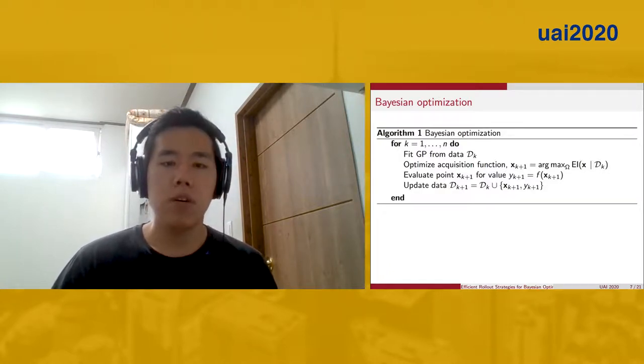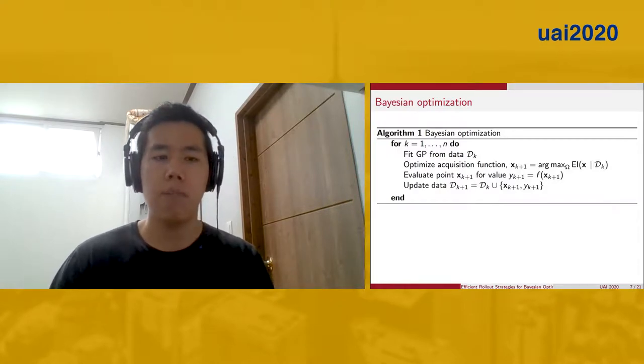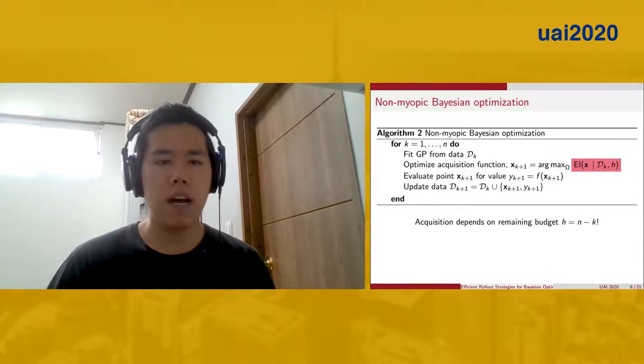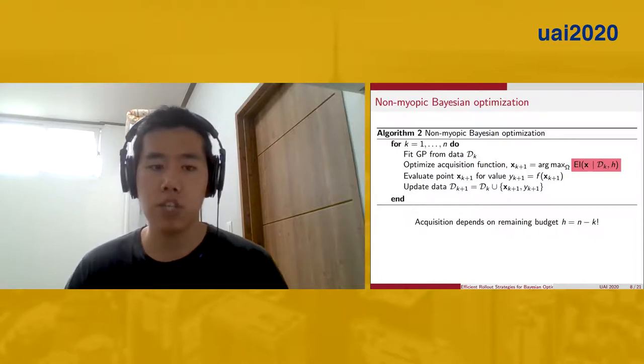A key challenge in BO is accounting for the impact of future evaluations, which is known as being non-myopic. We do so by modifying the acquisition function to take in as input H, which represents the remaining budget.